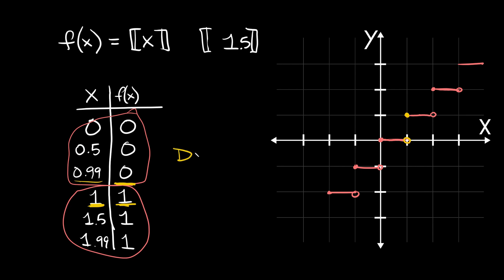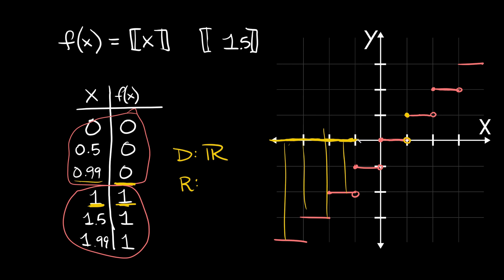The domain for all step functions is always all real numbers, written with the real number symbol. As you move along the x-axis, there's always some part of the function — the steps continue from negative infinity to positive infinity, so every x-value is covered.